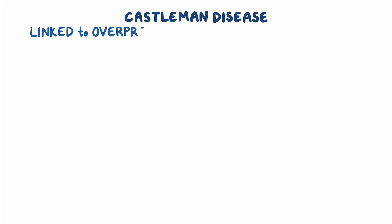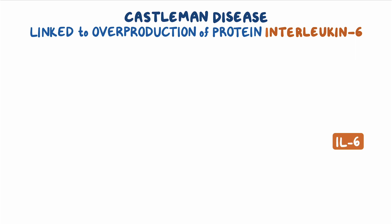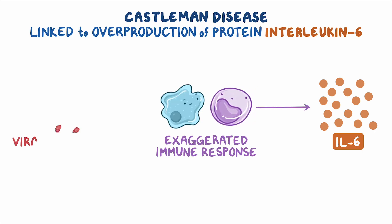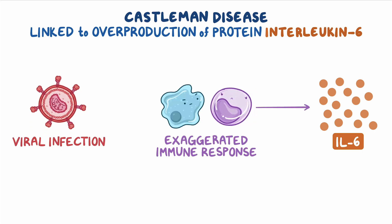Castleman disease is linked to the overproduction of a protein called interleukin-6, or IL-6, which plays a key role in regulating immune responses. The exact reason for this abnormal IL-6 production is not entirely understood, but it may result from an exaggerated immune response to certain viral infections, such as human immunodeficiency virus, or HIV, the infection responsible for AIDS.